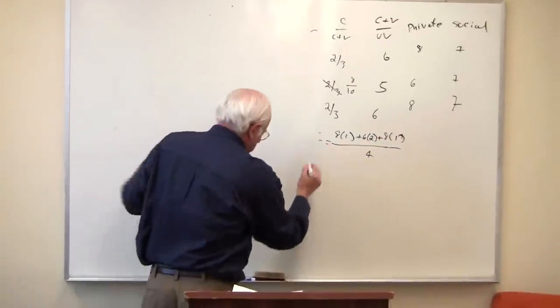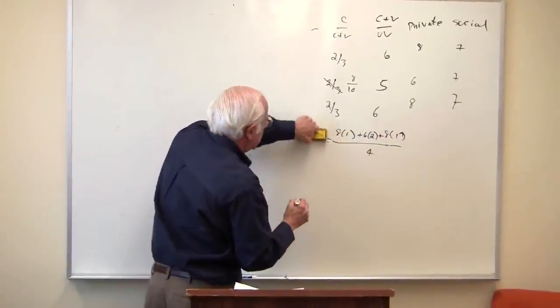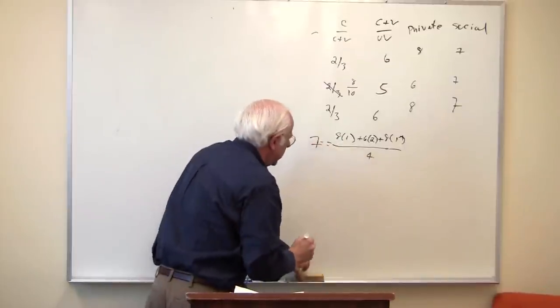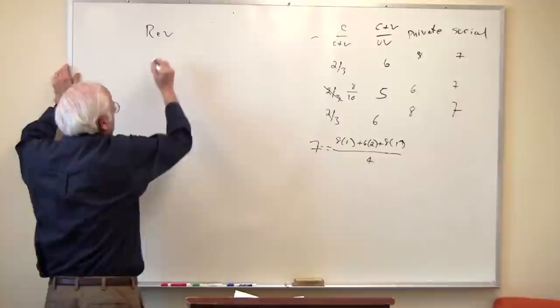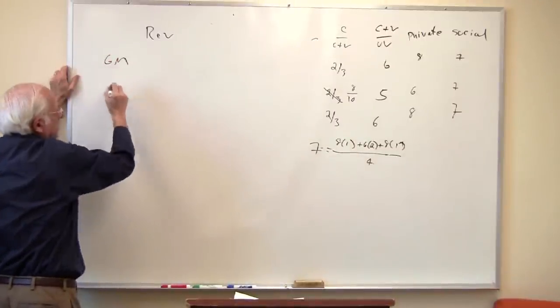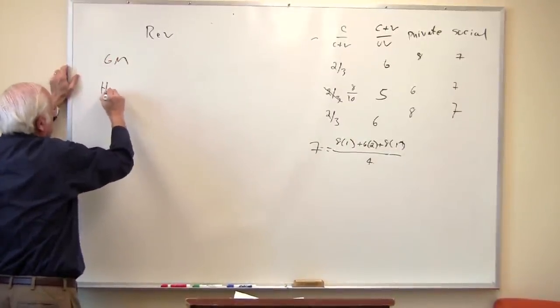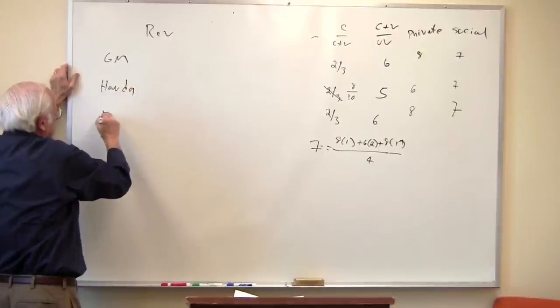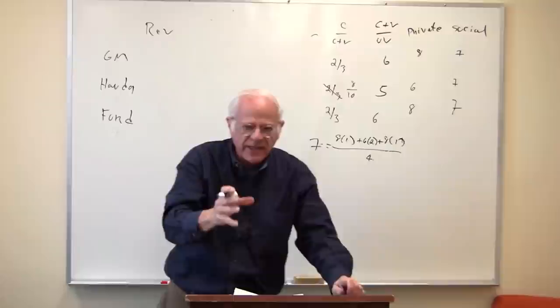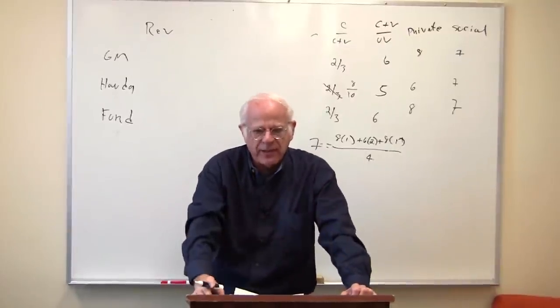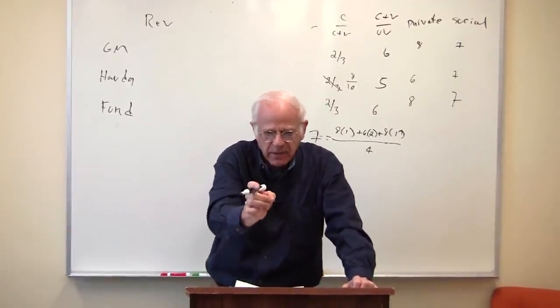Here, let me just, to remind us, put this 7 here. Here I have the revenue: General Motors, Honda, Ford. The revenue is the price, the socially necessary abstract labor time, that price, $7, times the quantity sold.